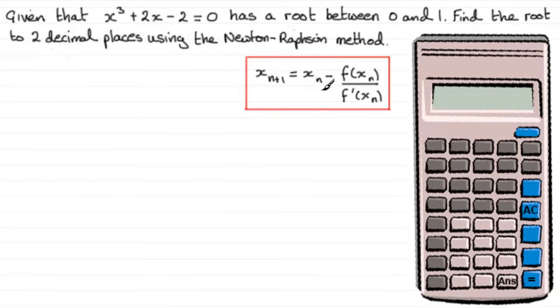If we know an approximation for a root, let's say we call it xₙ, then we can get the next approximation, a better approximation usually xₙ₊₁, by this formula: that next approximation is given by xₙ minus f(xₙ) all divided by f'(xₙ).